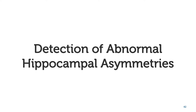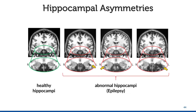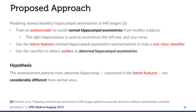Our first unsupervised solution for anomaly detection focuses on the detection of abnormal hippocampal asymmetries. The hippocampi of a healthy person are quite symmetric. However, some diseases like epilepsy atrophy one or both hippocampi, resulting in accentuated hippocampal asymmetries. Our proposed approach aims at modeling healthy hippocampal asymmetries in MR images. It trains an autoencoder to model normal hippocampal asymmetries from healthy subjects, uses the latent features from the autoencoder to train a one-class classifier, and finally uses this classifier to detect outliers as abnormal hippocampal asymmetries. Our hypothesis is that the reconstruction patterns from abnormal hippocampi are considerably different from the normal ones.